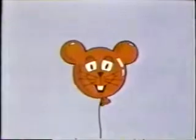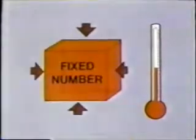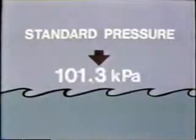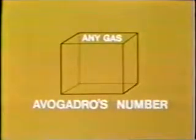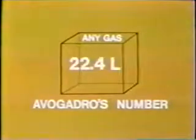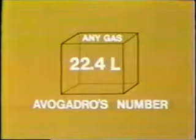The mole can also be used as a standard gas container. A fixed number of molecules at a fixed pressure and temperature fits in a fixed volume. Let's choose a standard pressure — atmospheric pressure at sea level, or 101.3 kilopascals — and a standard temperature, the freezing point of water, 273 Kelvin. Why not use Avogadro's number as our fixed number? The answer: 22.4 liters at standard temperature and pressure. 22.4 liters of any gas at standard temperature and pressure always contains a mole of molecules.